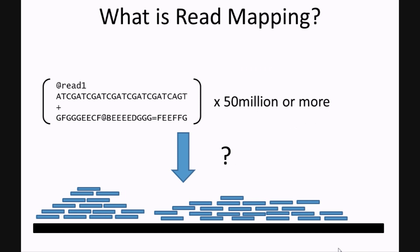What is read mapping? In most cases you're going to get tens of millions if not hundreds of millions of reads off of a sequencer, and we need a rapid and accurate way to find out where in the genome those reads originated from. This is independent of whether or not you're doing DNA or RNA sequencing.